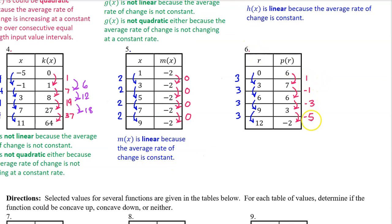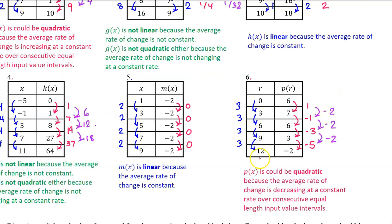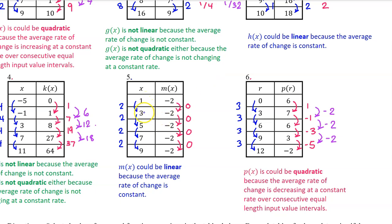For number 6, here are the changes in the output values and here are the changes in the input values. Since we once again have consecutive equal-length input value intervals, we do not actually have to calculate the average rate of change to see it is not constant, nor calculate the rate of change of the rate of change to see that the average rate of change is decreasing at a constant rate. We can say that p(x) could be quadratic because the average rate of change is decreasing at a constant rate over consecutive equal-length input value intervals. Looking back at two of my previous answers, I should have said 'could be linear' instead of just 'is linear,' because technically these functions could do something unexpected between the given values.